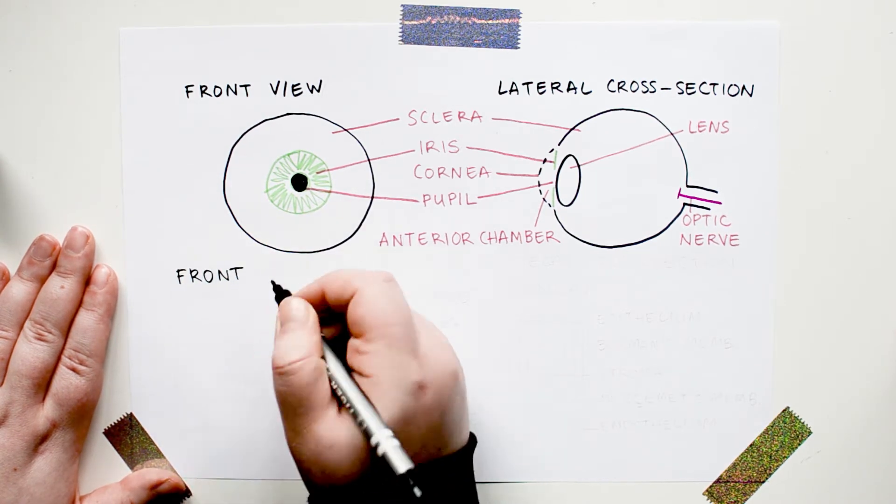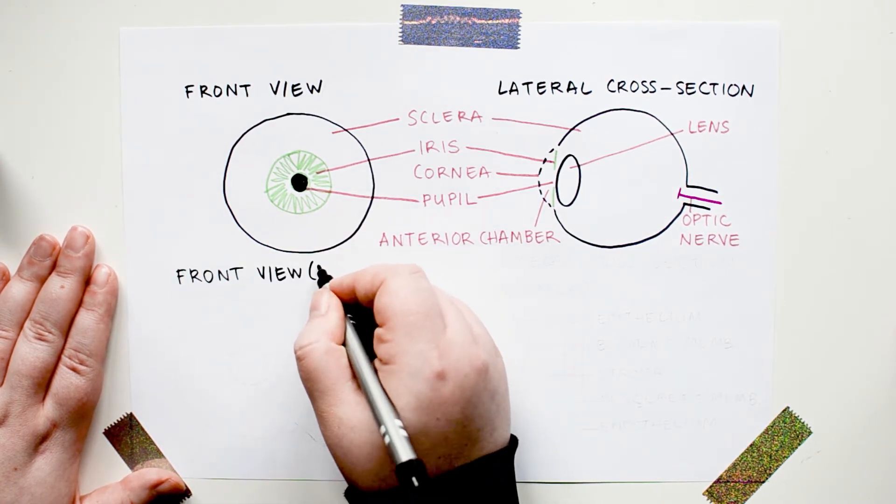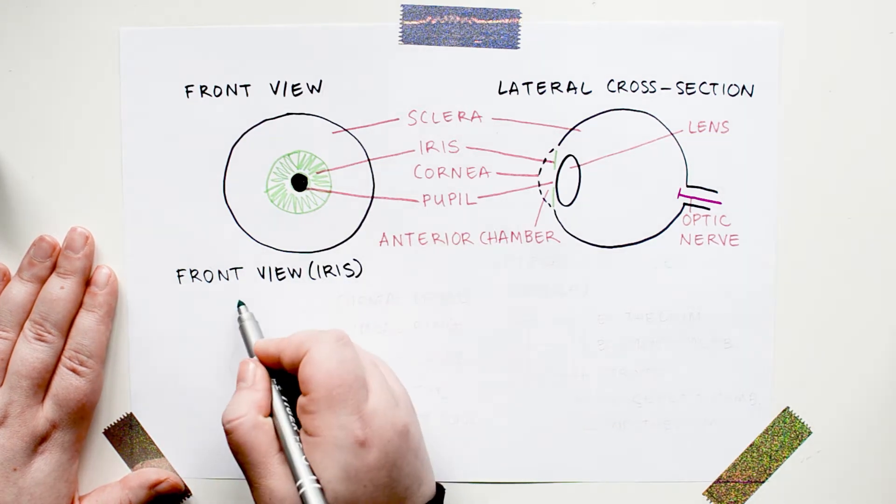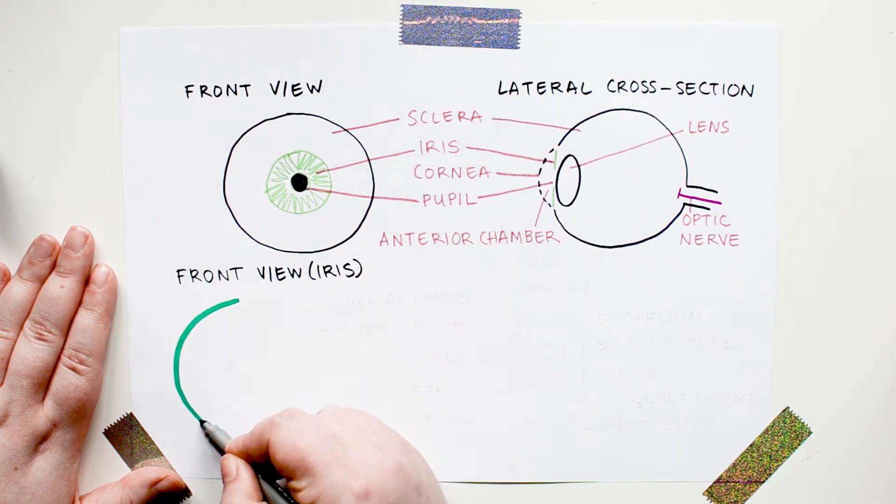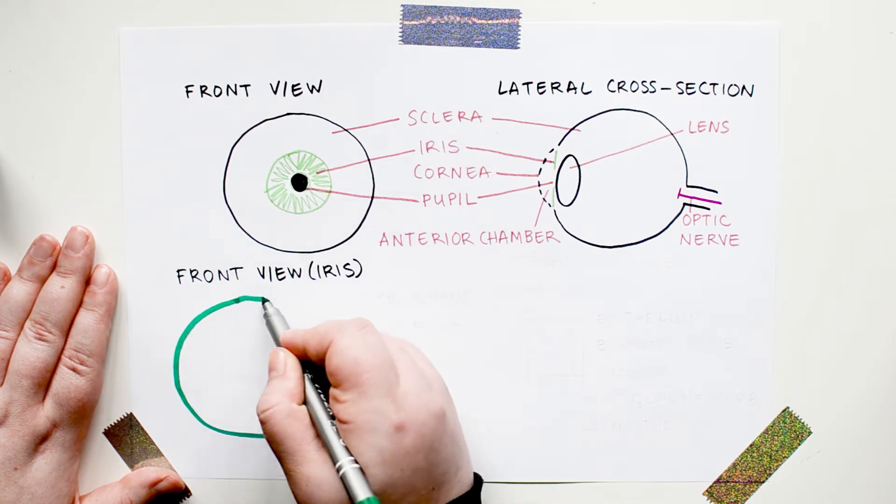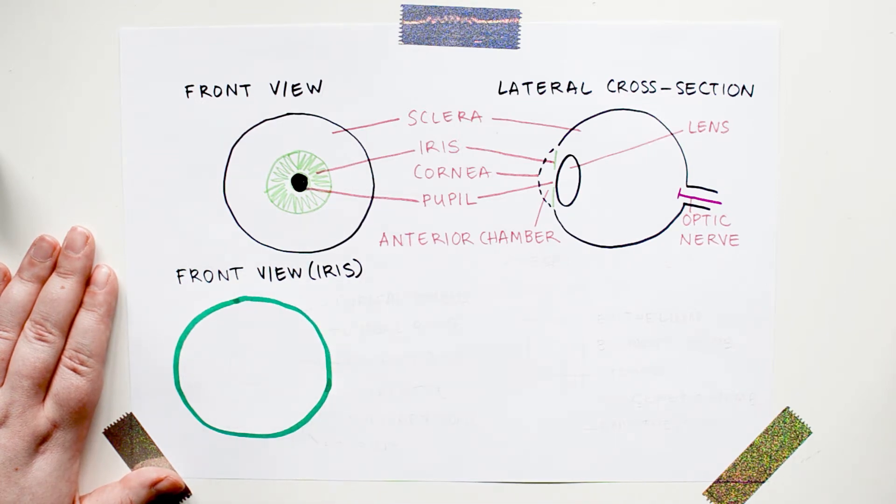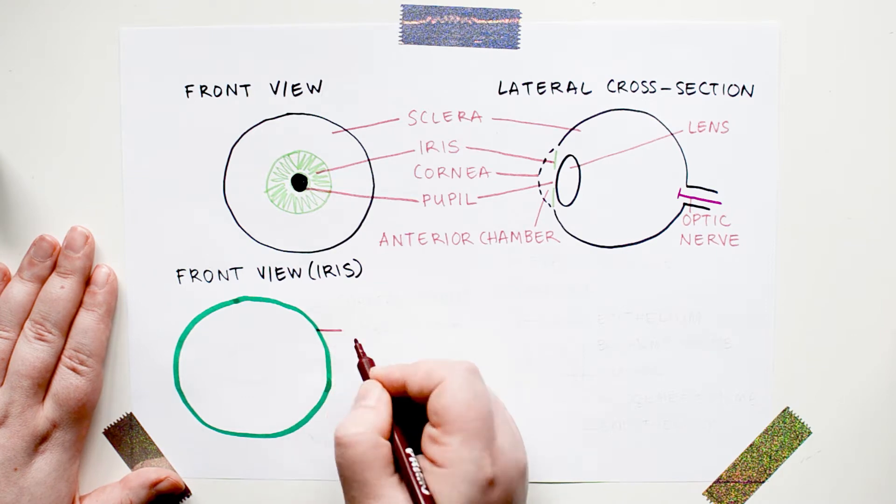Now here on the bottom left, let's draw a front view of the iris alone, a bit closer up so we can see more detail. Pay attention because this is really, really important.